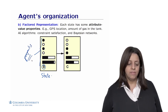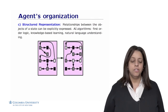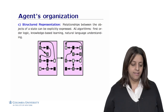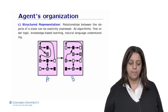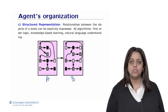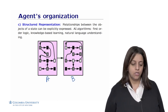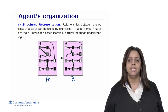AI algorithms leveraging factored representation include constraint satisfaction problems and Bayesian networks. In the third representation, called structured representation, relationships between the objects of a state can be explicitly expressed. States not only have attribute values but also relationships between objects — for example, a pedestrian crossing the street establishes a relationship between pedestrian and street. AI algorithms leveraging structured representation include first-order logic, knowledge-based learning, and natural language processing and understanding.